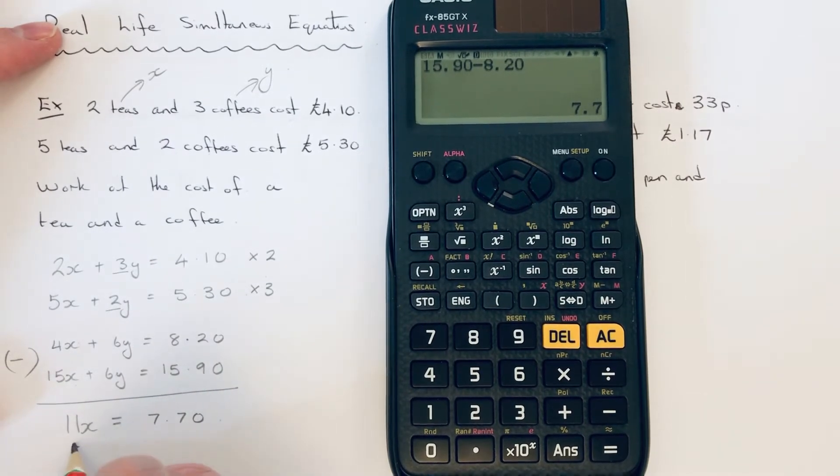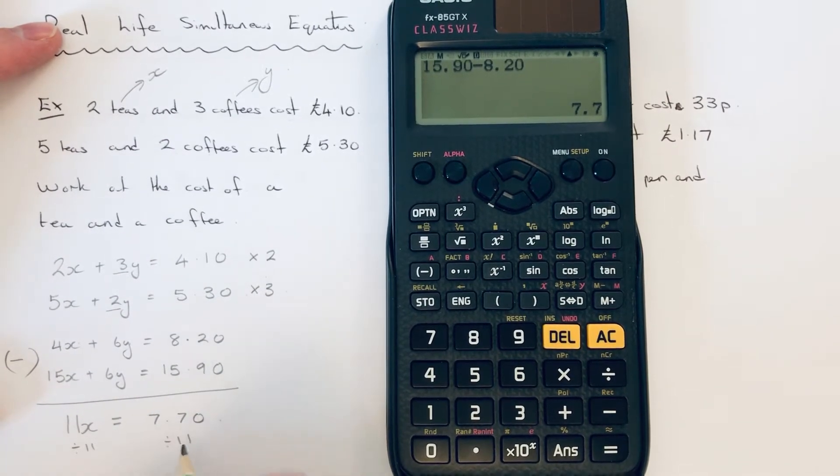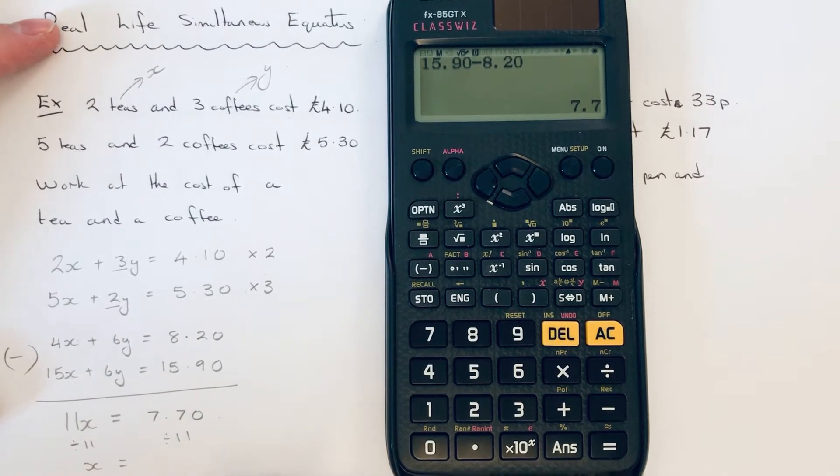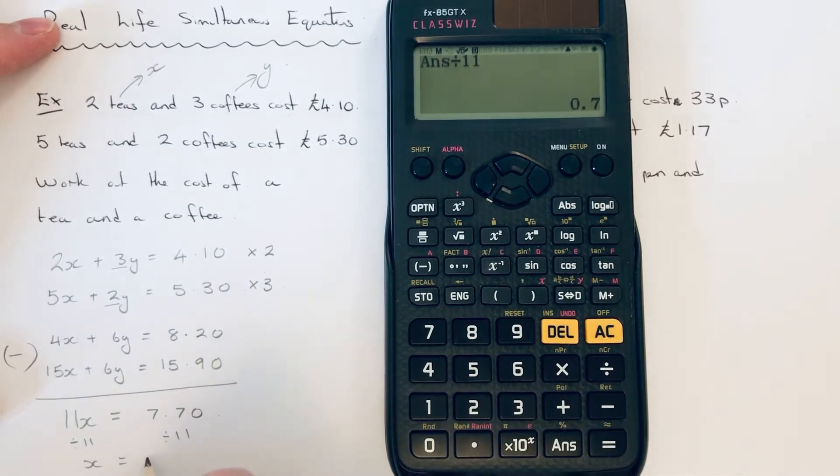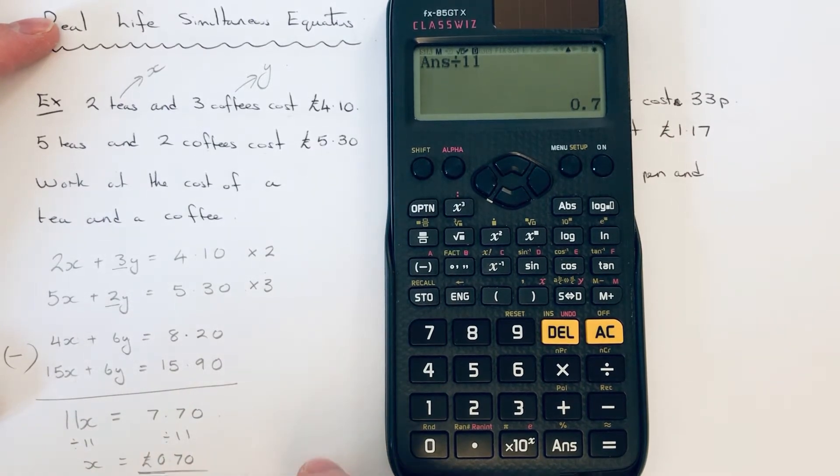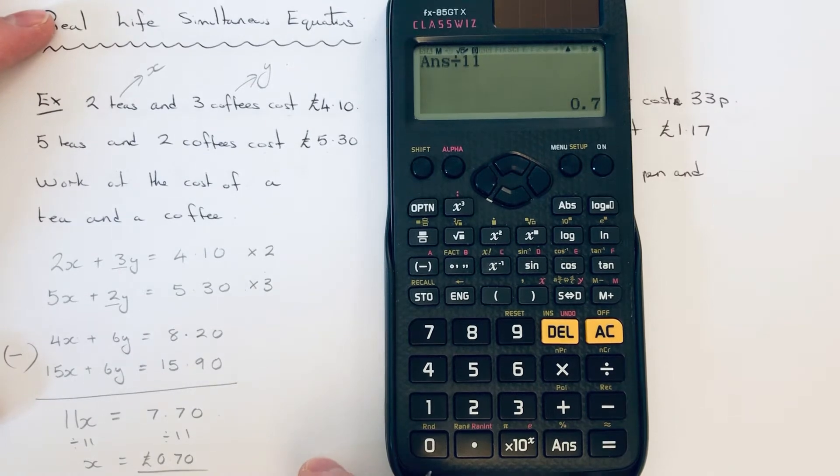So if we just divide by 11 now, that will tell us the value of x. So £7.70 divided by 11 is 0.7. So that's 70p. So that is the price of a cup of tea.